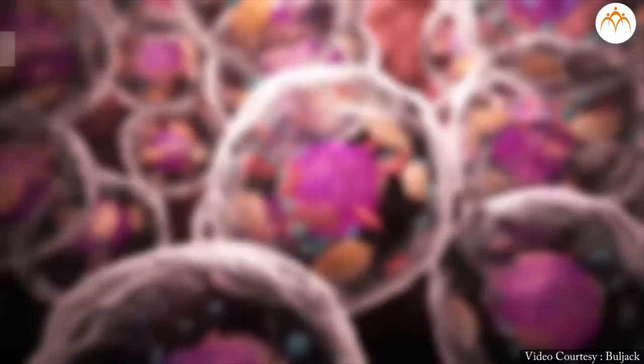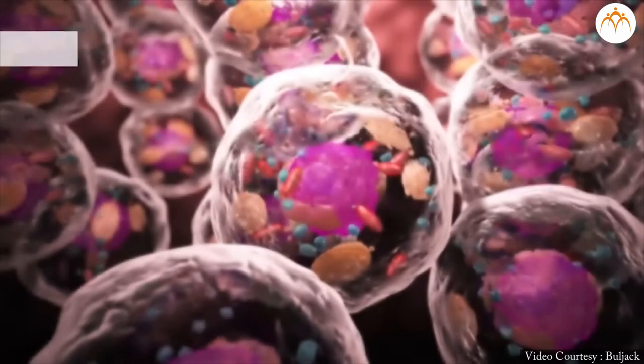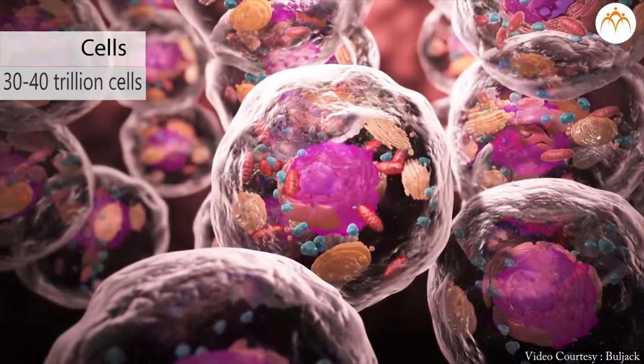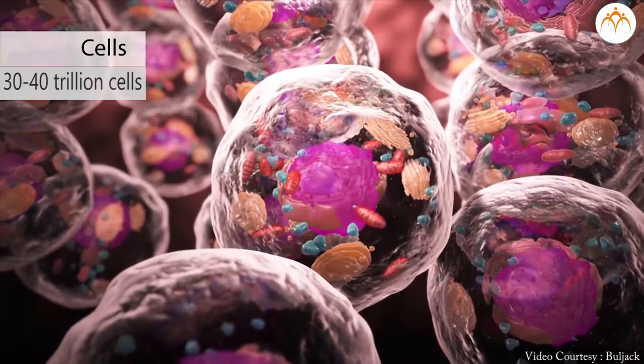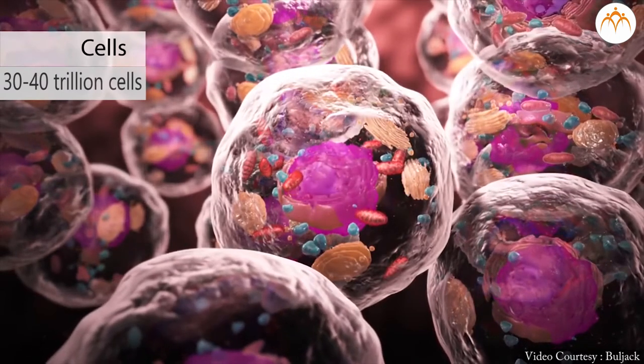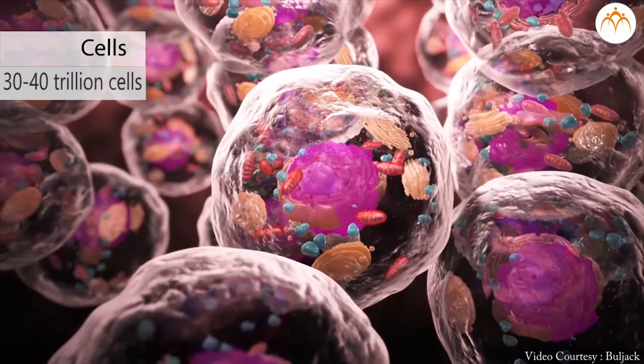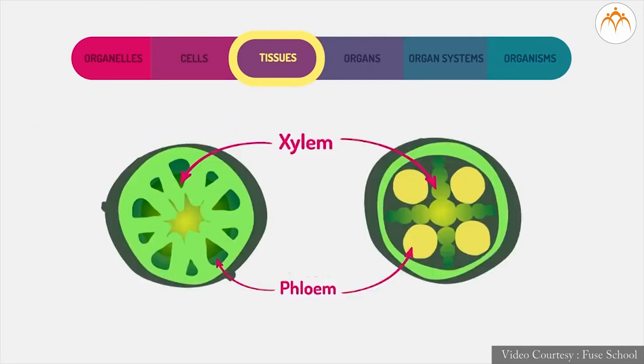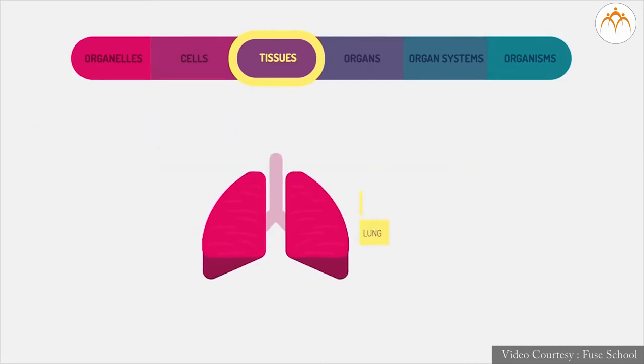Let us begin our session by considering our body. Do you know how many cells are there in human body? On average, our body is made up of 30 to 40 trillion cells. I guess you understand that all these cells are not of same type. There are about 200 different cell types which make up tissues and eventually organs and parts of our body.